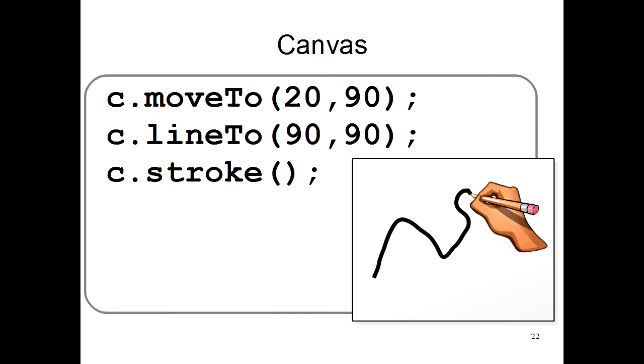The program uses something called a canvas for doing drawing. A computer canvas is like a painting canvas. It's like having a blank piece of paper to draw on.